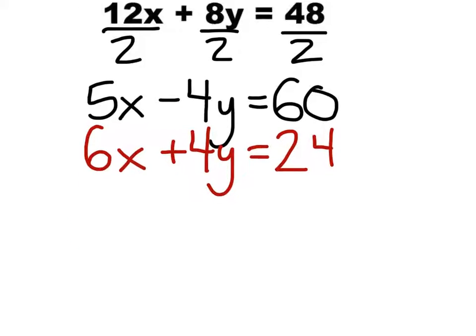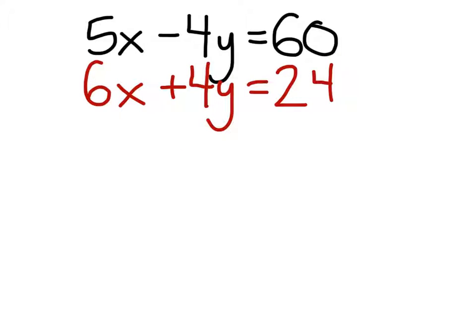Now that we've reached this point, let's look at our new system. 5X minus 4Y equals 60, and 6X plus 4Y equals 24. Now that the absolute values of the Y coefficients are the same — both 4 — you want them to have opposite signs. That's a negative 4Y and a positive 4Y. That's what we want when we're eliminating, because when we combine these two, we're going to get zero Y's.